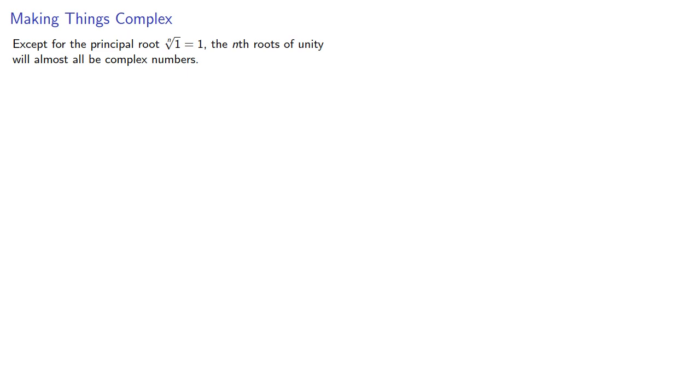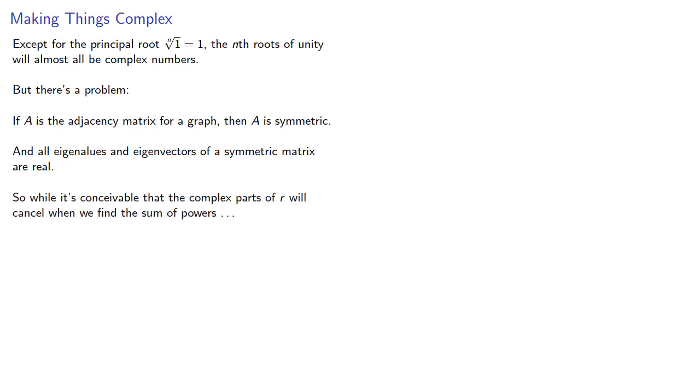Now, except for the principal nth root of unity, which is just 1, the nth roots of unity will almost all be complex numbers. But there's a problem. If A is the adjacency matrix for a graph, then A is symmetric, and all eigenvalues and eigenvectors of a symmetric matrix are real. So, while it's conceivable that the complex parts of r will cancel when we find the sum of powers, what happens to the complex parts of the eigenvector? We'll take a look at that next.